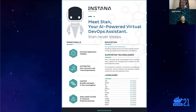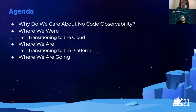What is Instana? Instana is an enterprise observability platform. What you can see here is Stan, our friendly robot assistant for all things DevOps and observability. Instana provides full-stack visibility. We aim to automate as much as we can, provide as much context as we can, and derive intelligent actions out of it. So what are we going to talk about today? First, why do we care about no-code observability? Then where we are coming from, where we are today, and last but not least, where we are going.